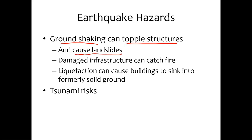Earthquakes can trigger mass wasting events. That can happen as a result of shaking the ground and destabilizing some loose sediment or some rocks that are just held in place on the surface very loosely. You can have damaged infrastructure that catches fire because of things like broken gas mains or broken electrical lines. You can also have liquefaction, where the ground essentially behaves like a liquid, and that causes buildings to tip or to sink into formerly solid ground.